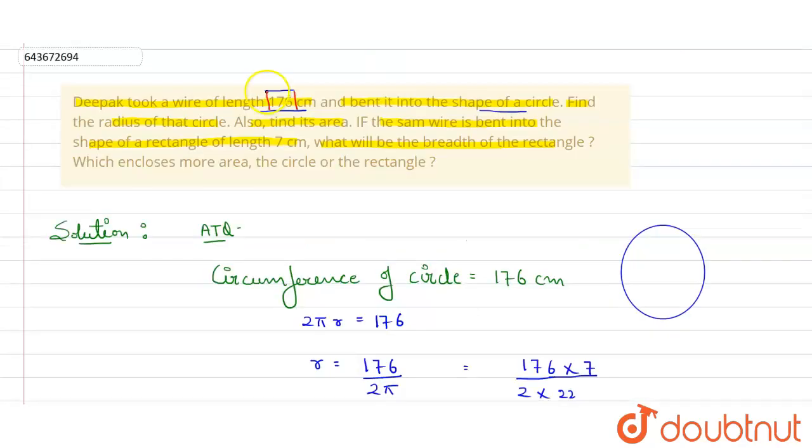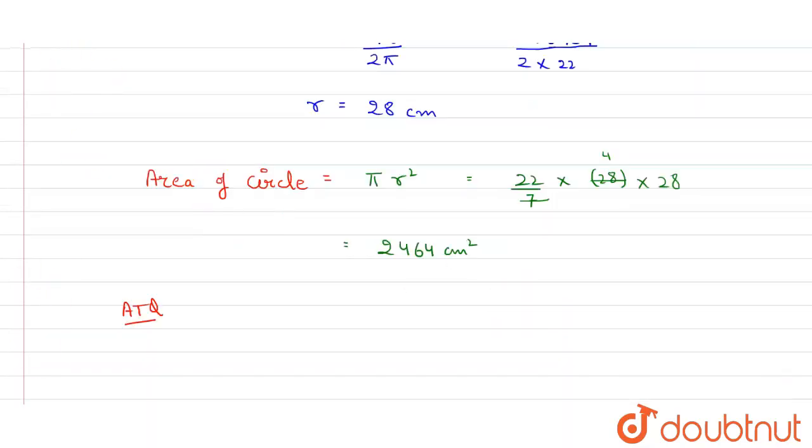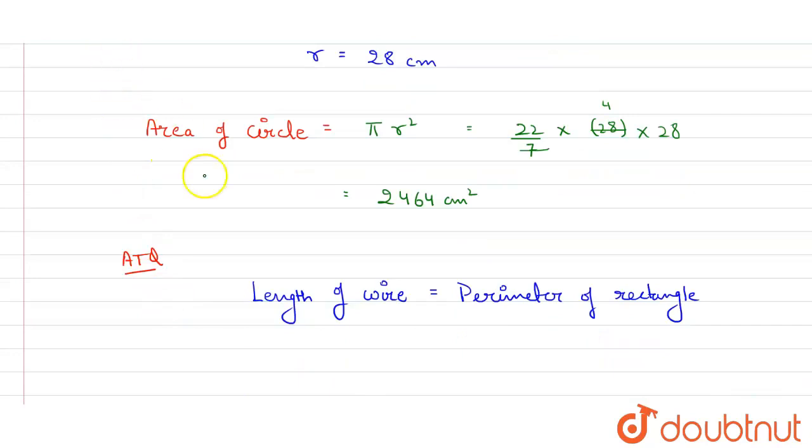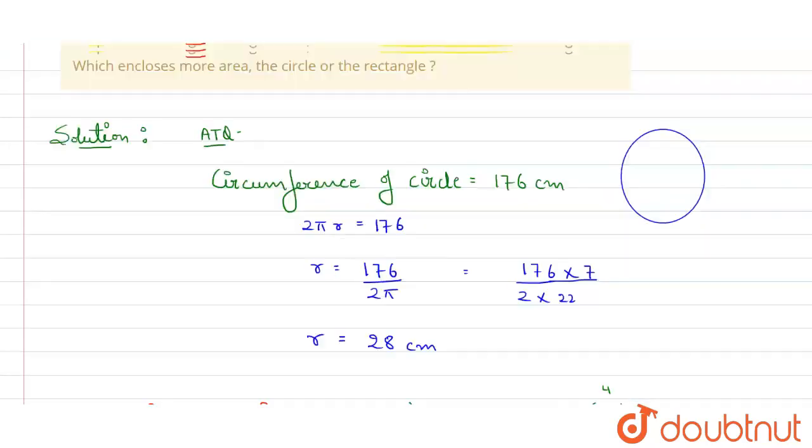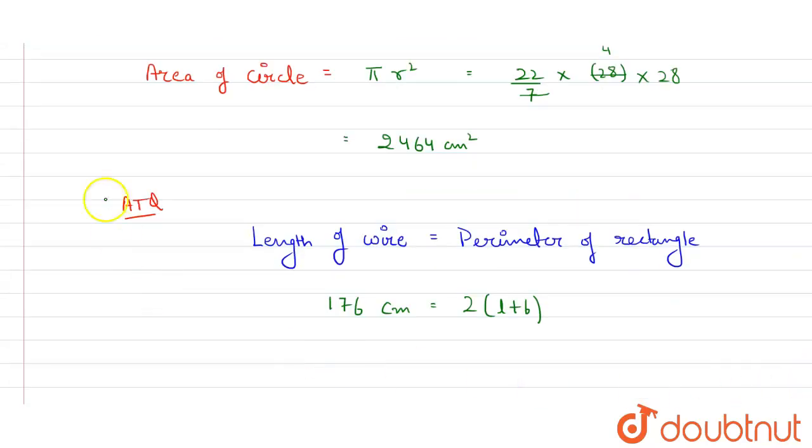Again same process here. Length of this wire which was 176 will now be changed into perimeter of rectangle. According to question, length of wire equals now perimeter of rectangle. Formula for perimeter of rectangle is 2(l + b). Length of wire was given 176 centimeter, and value of length is given 7 centimeter. So 2(7 + b) equals 176.